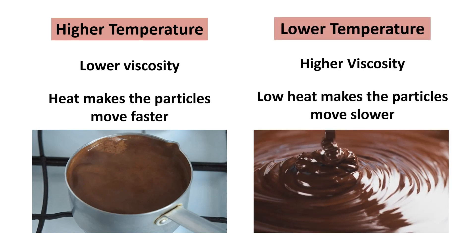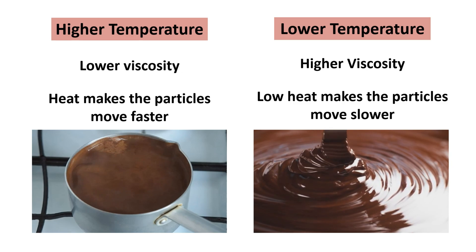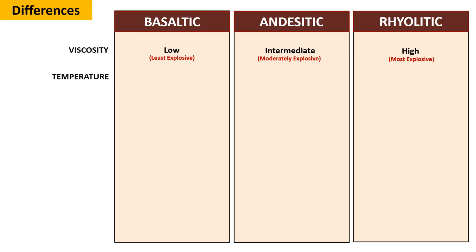Just like chocolate heating up at a lower temperature, it becomes more viscous or thick. Basaltic has the highest temperature, ranging from 1,000 degrees Celsius to 1,200 degrees Celsius. Andesitic has a lower temperature than basaltic but higher than rhyolitic, ranging from 900 degrees Celsius to 1,000 degrees Celsius. While rhyolitic has the lowest temperature, ranging from 750 degrees Celsius to 900 degrees Celsius.